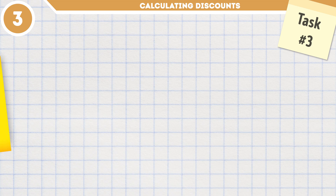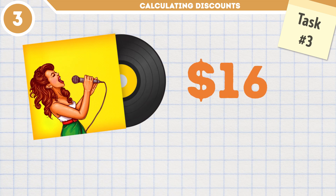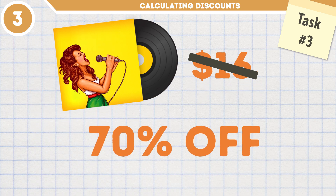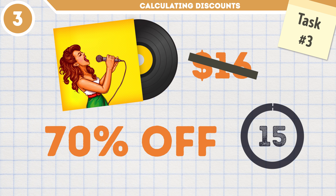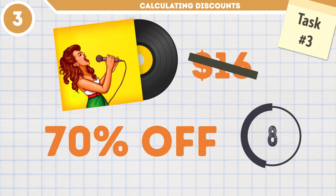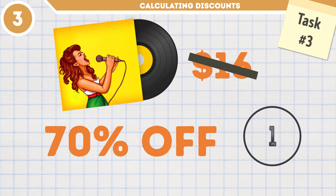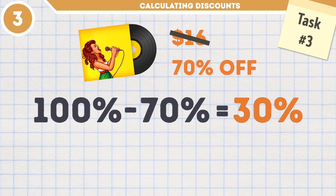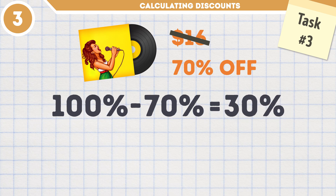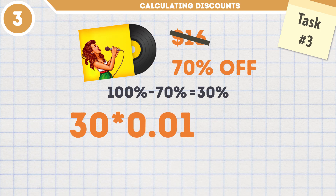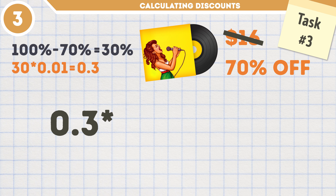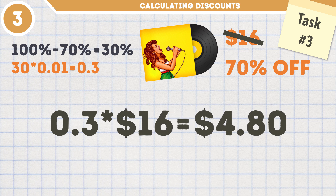Task number 3. The vinyl record of your favorite album of all time costs $16, but you're in luck — the store's having a huge sale and now you can buy it at 70% off. How much does the album cost now? Thanks to the sale, you'll only pay 30% of the album's original price. We multiply 30 by 0.01 to get 0.3, then multiply it by $16. In the end, you can get this vinyl for only $4.80.